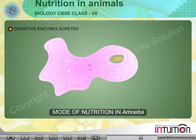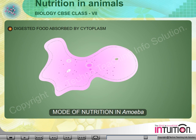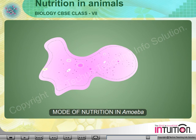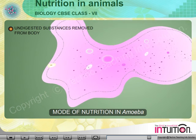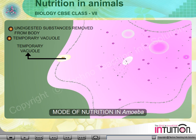Some digestive enzymes are secreted that digest the food particle. The digested food is absorbed by the cytoplasm. The undigested and unabsorbed substances are removed from the body by a temporary vacuole.